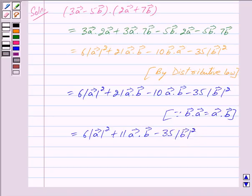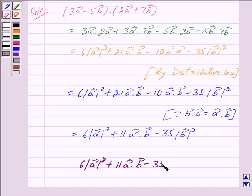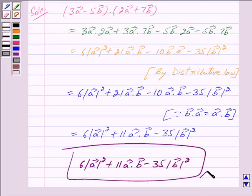So, we have got our answer as 6 |vector A|² plus 11 (vector A dot vector B) minus 35 |vector B|². Hope you have understood the solution. Bye and take care.